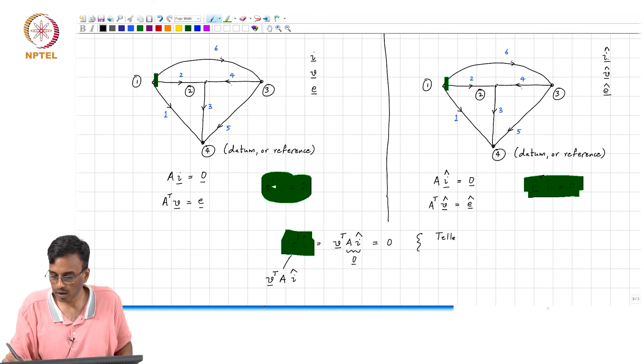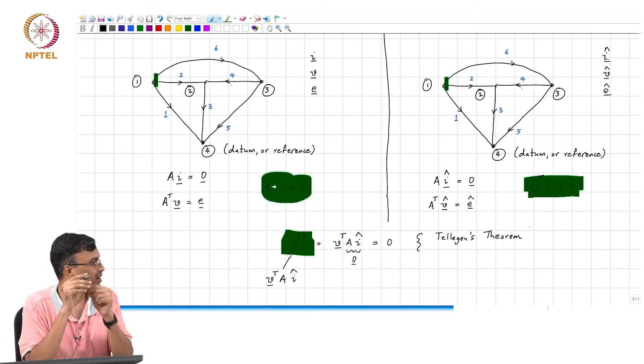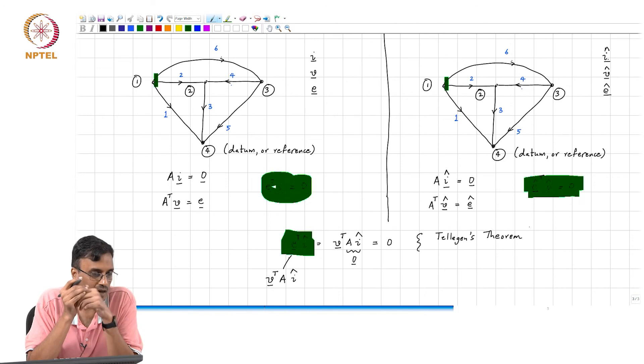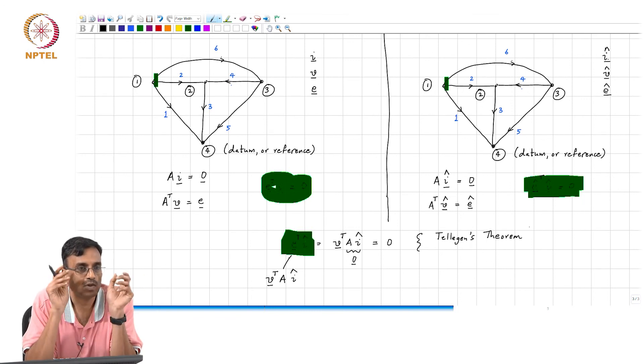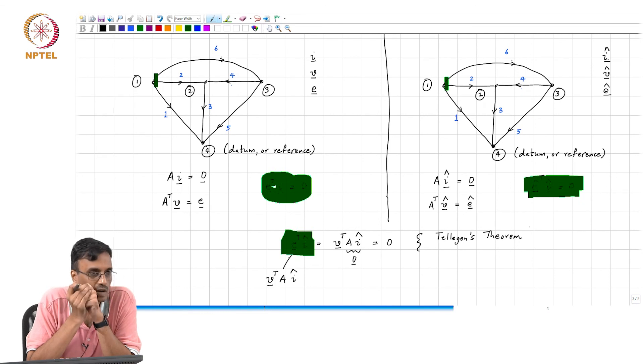And quite surprisingly, it was discovered somewhat late, given that people have been working with circuits for a really long time. This theorem came out sometime in the late 1950s, I think. You would have thought that, somebody would have thought of this within quotes, obvious observation, a long time ago, but it is actually quite recent, relatively speaking.